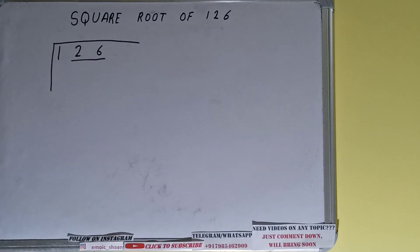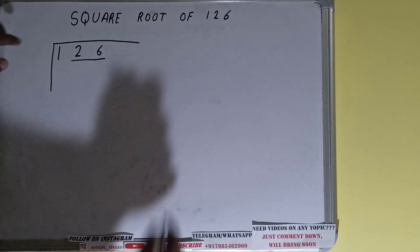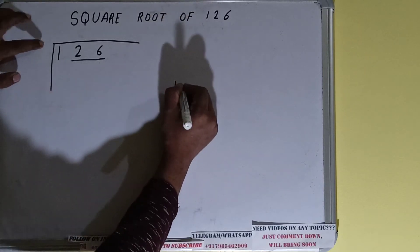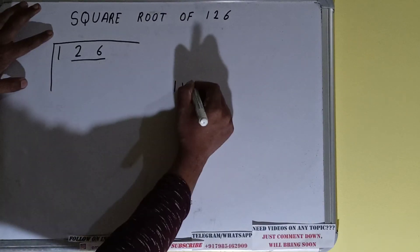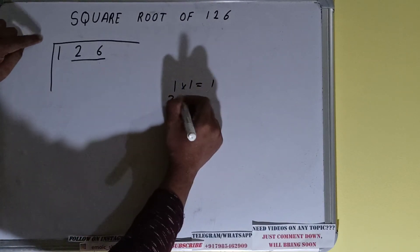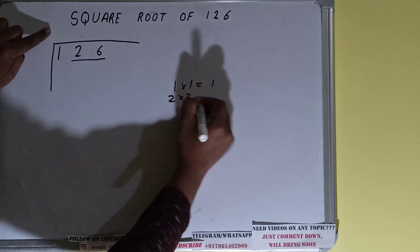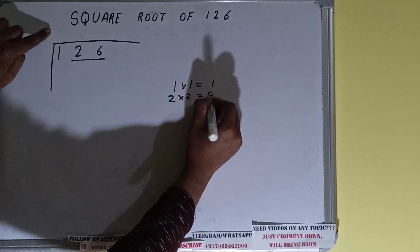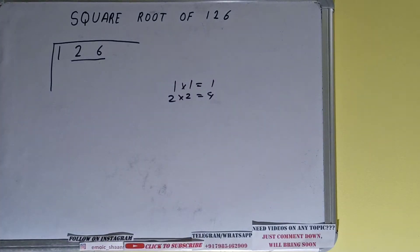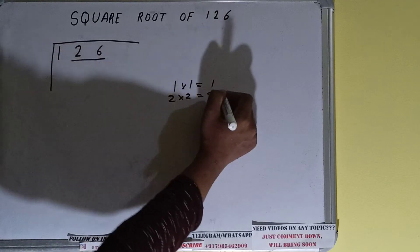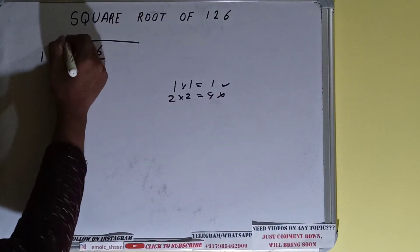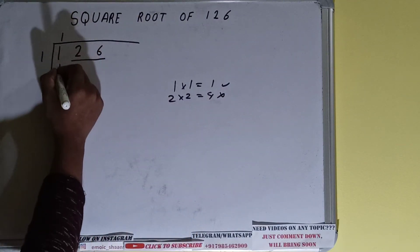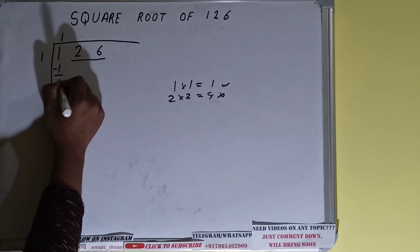The rule is whatever number we place here we have to place here also. If we place one here we place one here — it will be one. If we place two here it will be four, but we cannot go with two because four is greater than one. So we go with one: one here and one here, subtract — it will be left with zero.